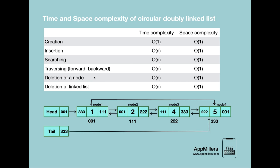The next operation is deletion of a node. This also takes O(n) time complexity because if you want to delete a node from the middle of the circular doubly linked list, you have to traverse until you reach that node. In the worst case, you might traverse until the end of the list. The space complexity is O(1) because we only use a temporary node for traversing.